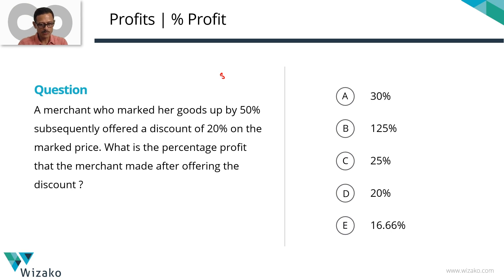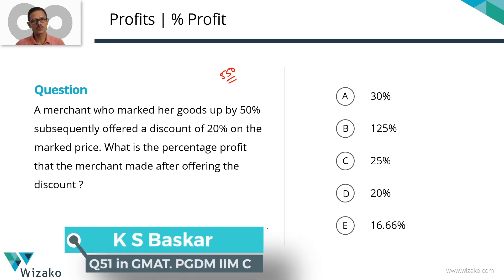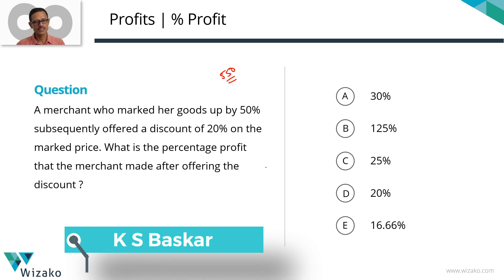A GMAT 550 level problem solving question from the topic percentages and profits. A merchant who marked her goods up by 50% subsequently offered a discount of 20% on the mark price. What's the percentage profit that the merchant made after offering the discount?